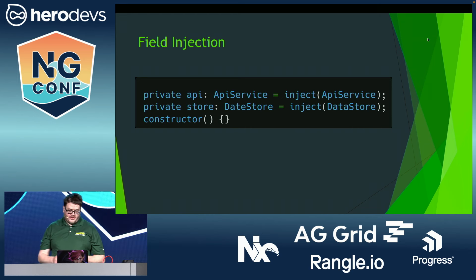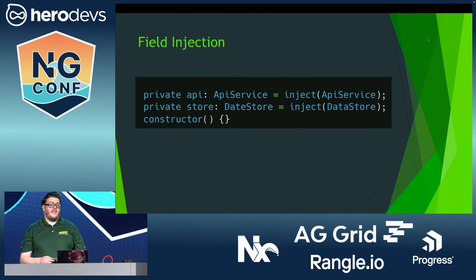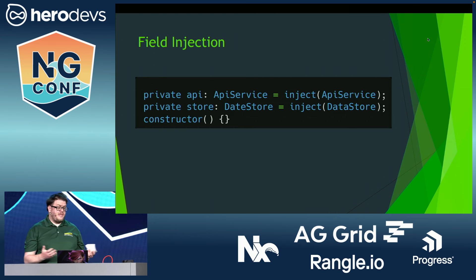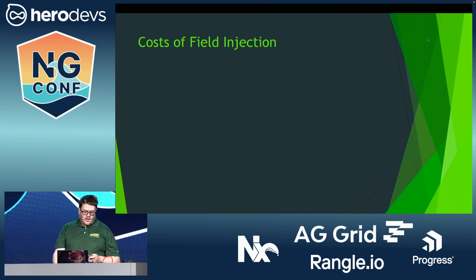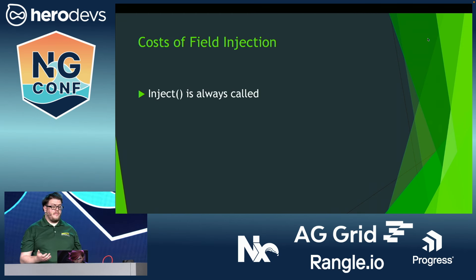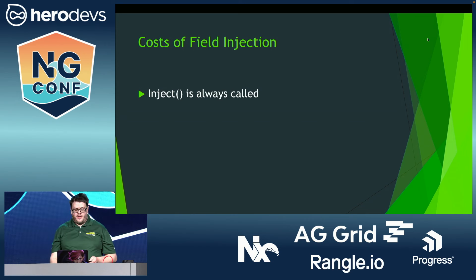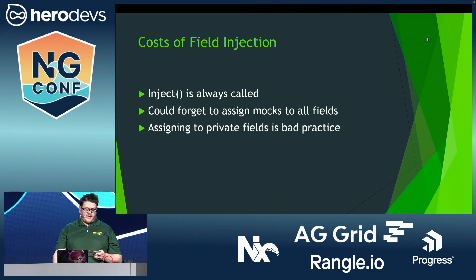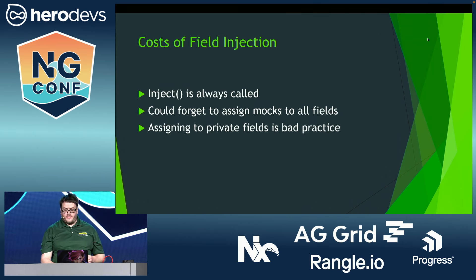A popular pattern for using the inject function — one that I've seen in quite a few demos — looks like this. In this example, dependencies are declared as fields that are assigned to the result of the inject function. Appropriately enough, it's called field injection. There are a couple of issues with this approach, though. The inject function is always called, so a replacement has to be created for it. It's easy to forget to assign a field in a test, leading to 'cannot read x of undefined' errors, and the fields could become private, meaning that even more awkward methods like string indexing have to be used in order to access or reassign them.